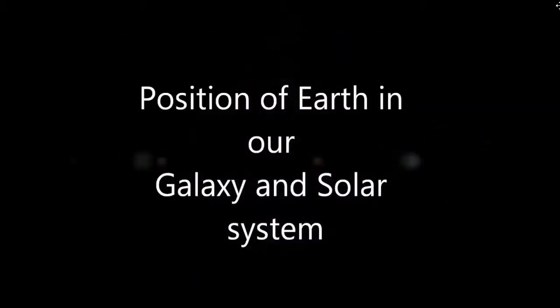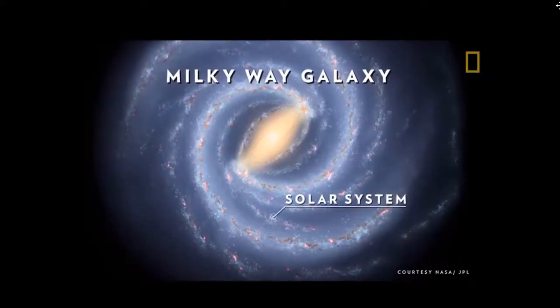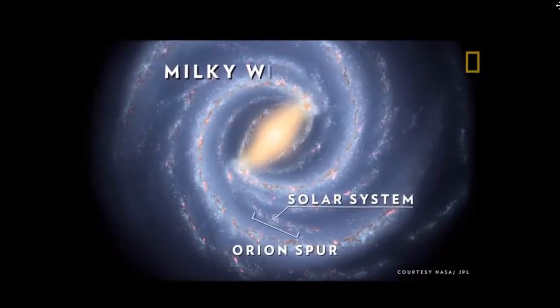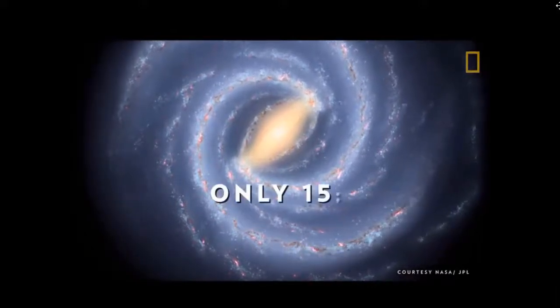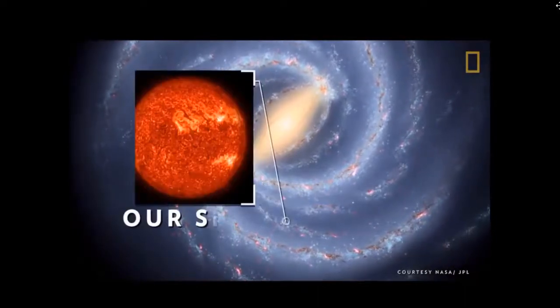Now we will learn the position of the Earth in our galaxy and solar system. The solar system is located in the Milky Way's Orion star cluster. Only 15% of stars in the galaxy host planetary systems, and one of those stars is our own Sun.